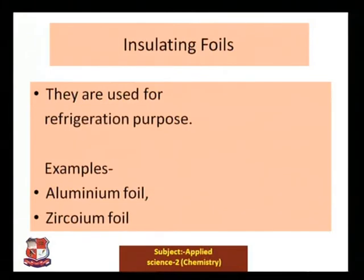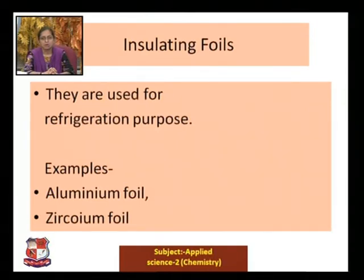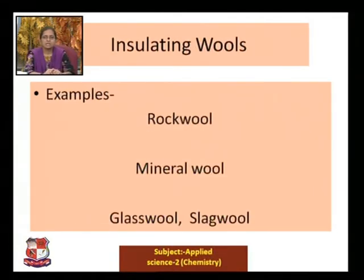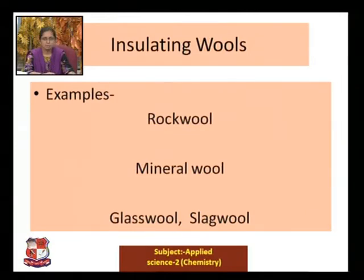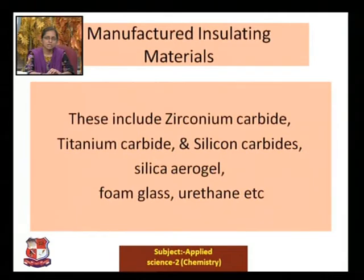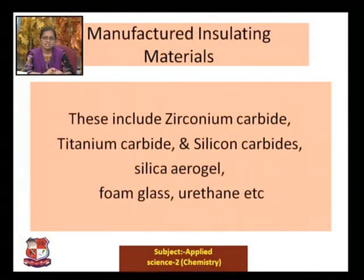Insulating foils are used for refrigeration purposes — examples include aluminium foil and zirconium foil. Insulating wools include rock wool, mineral wool, slag wool, and glass wool. Manufactured insulating materials are synthesized in industries and include zirconium carbide, titanium carbide, silicon carbide, silica aerosol, foam glass, and urethane.